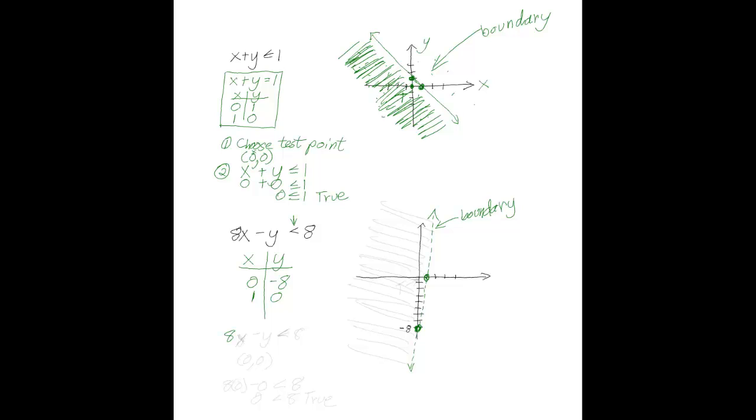All right, here we go. If I've got 8x minus y is less than 8, it's strictly less than 8. And I choose the point because I can. A line doesn't go through it, so I can choose it. 0, 0 is going to be my test point. That means I'll have 8 times 0 minus 0 is less than 8. So, 0 is less than 8. That's true.